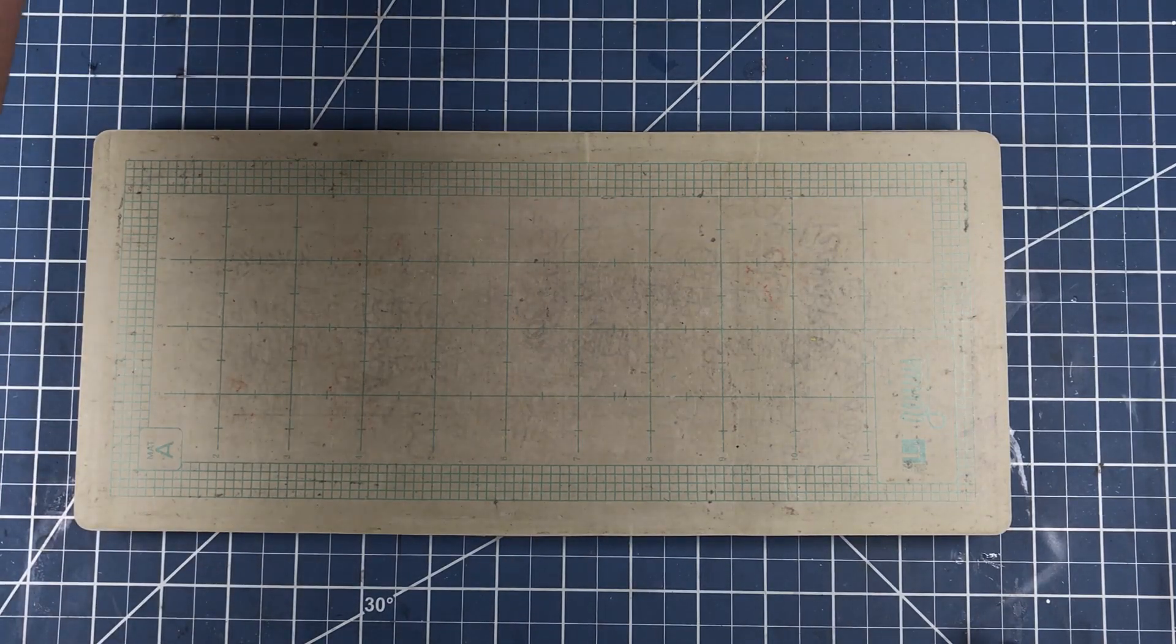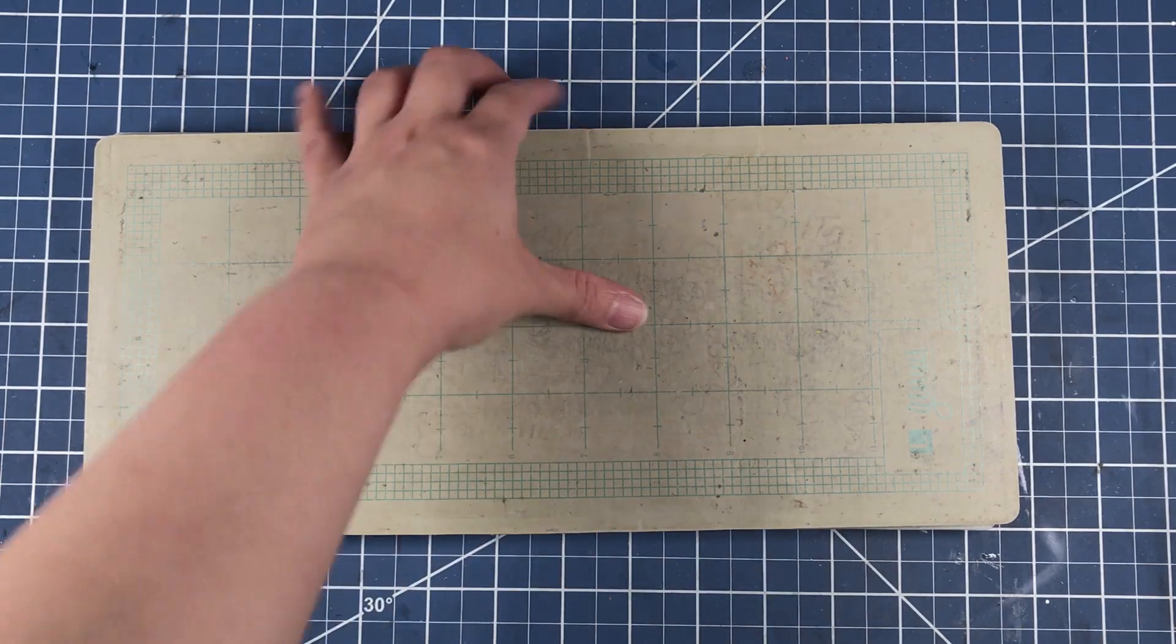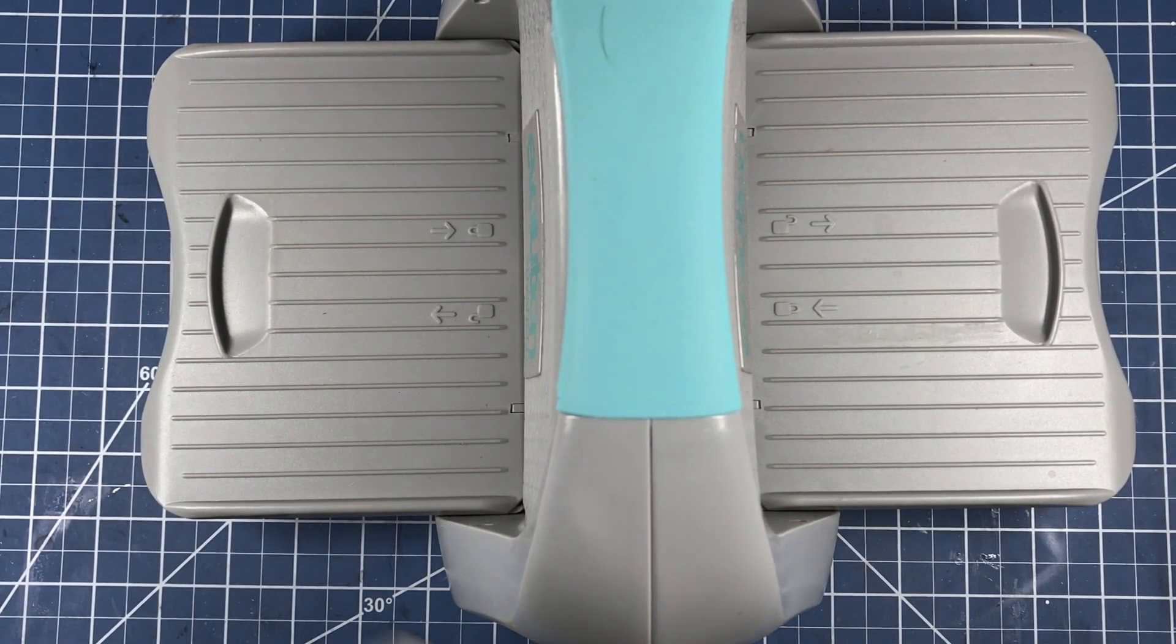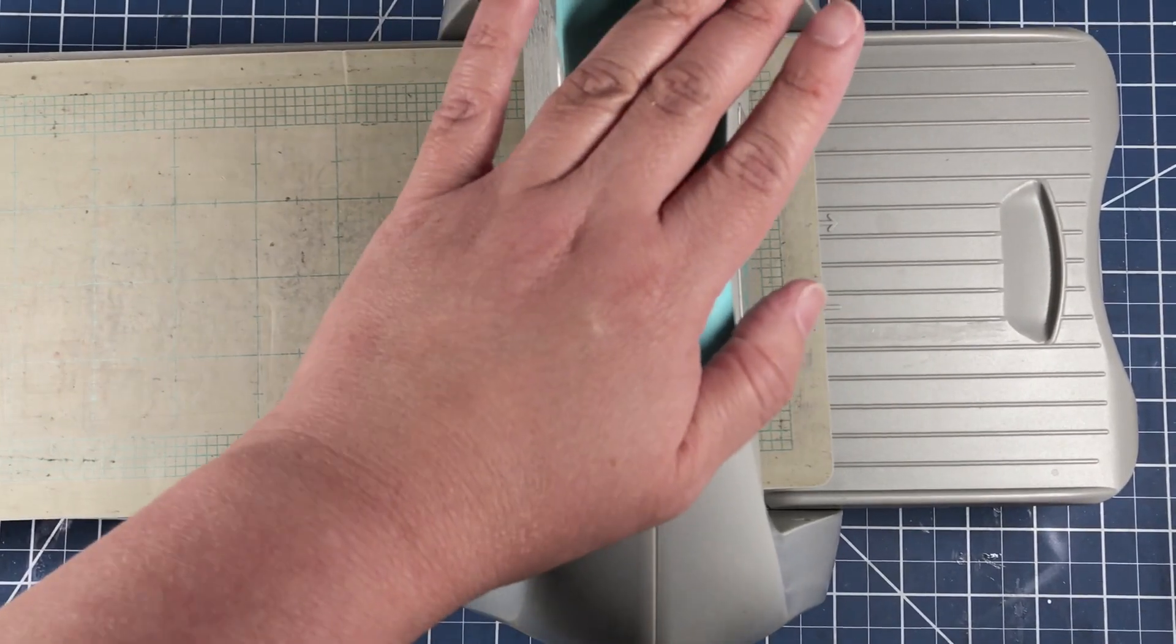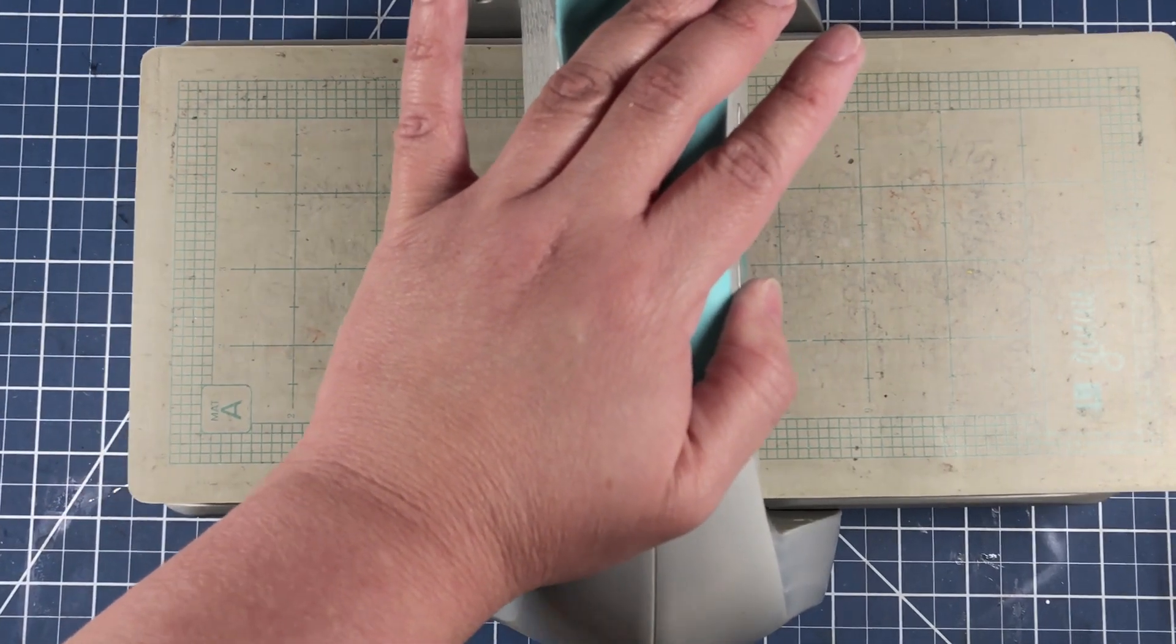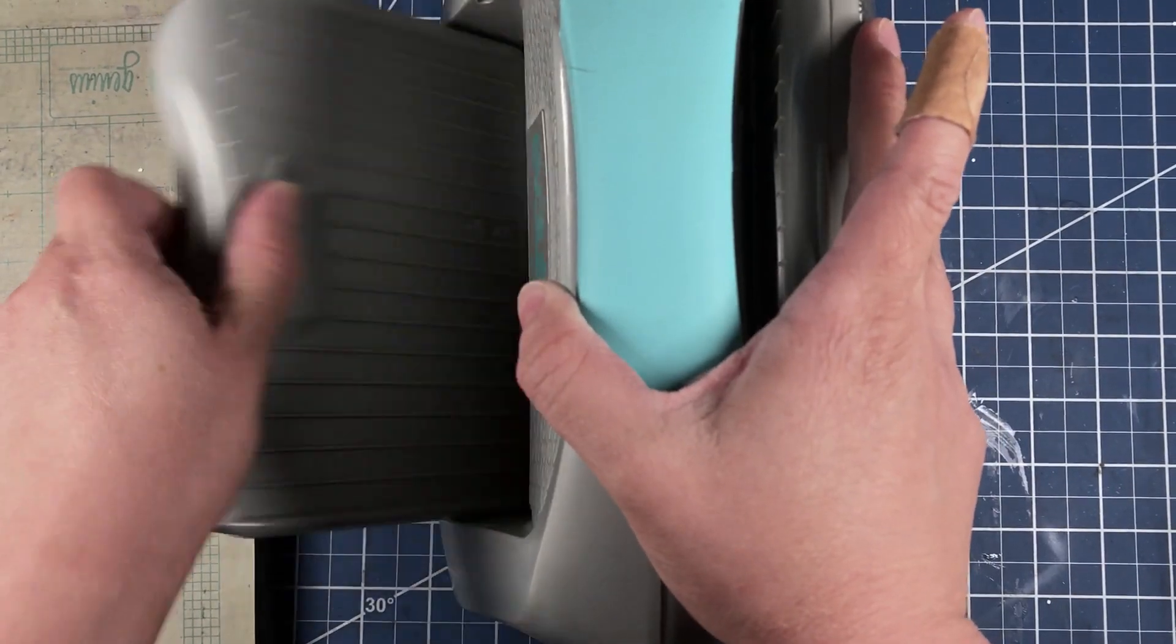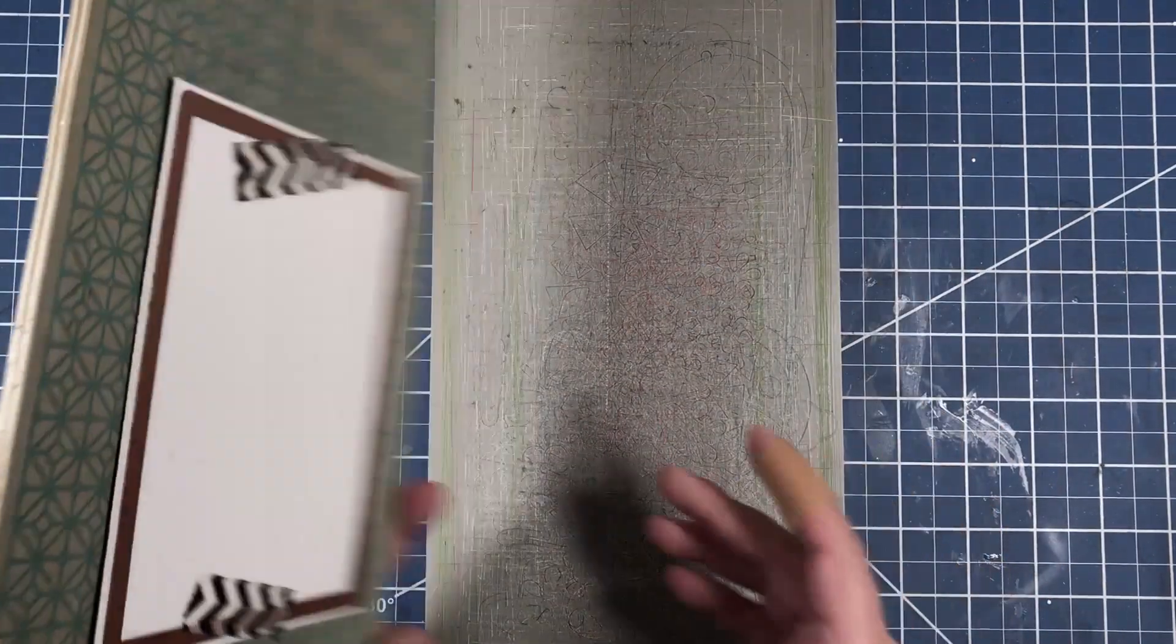If you've watched my die cutting videos before, you'll know that this is a bit different than the machine I usually use. This is my We R Memory Keepers Evolution and I normally use this machine when I travel as opposed to when I work at home, and that's because this die cutting machine can easily fold up whereas my Sizzix Big Shot can't do that.